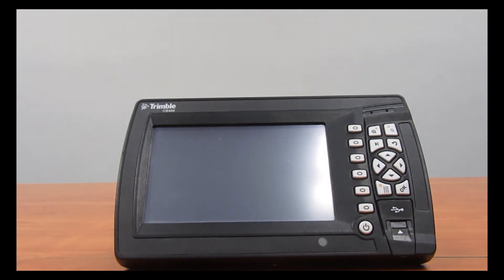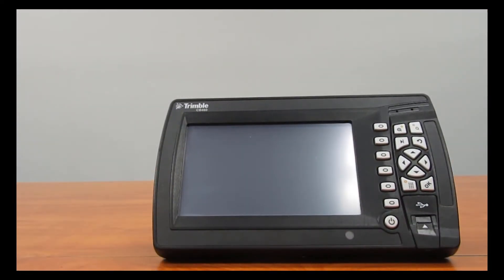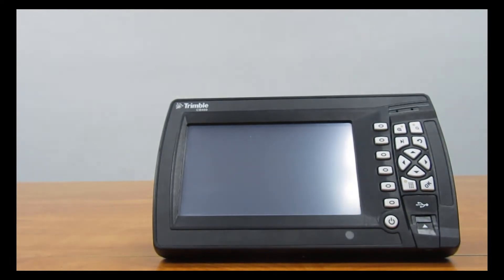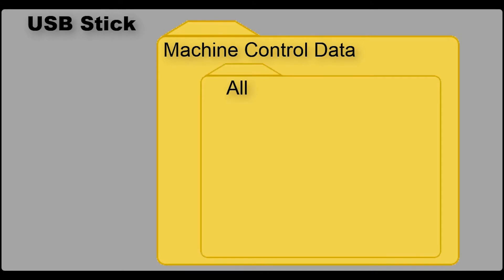The other type of control box we have is the newer CB460 and CB450. The CB460 has a slightly larger screen, but they both work exactly the same. These utilize the USB port on the CB460, and on the CB450 there's a little rubber flap that flips down. On both of these you insert your USB stick. On the root directory of the USB stick, you'll have a folder called Machine Control Data, and inside that, a folder called ALL — A-L-L. Inside the ALL folder is where you place your design files or machine files.